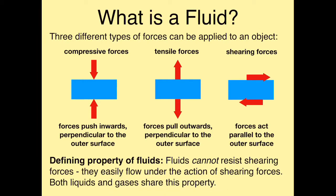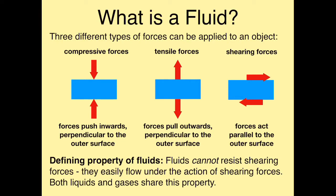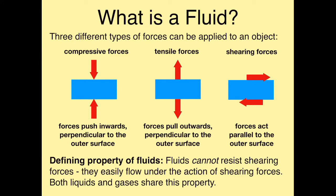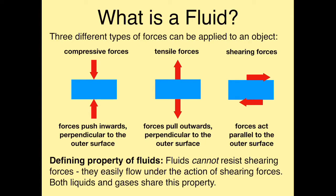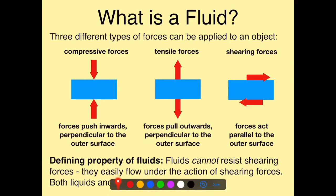We'll start by considering three different types of forces that can be applied to an object. Let's say this is our object — it has a rectangular shape. One way we can apply a force is to compress it. If we apply a compressive force, we're pushing inwards, and the force is perpendicular to the surface. The force vector is going inwards — that's what a compressive force is.